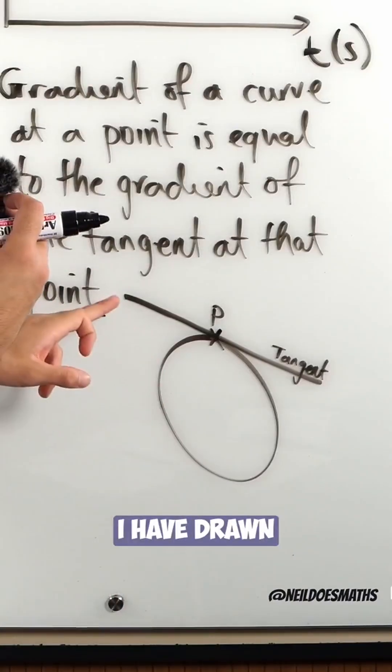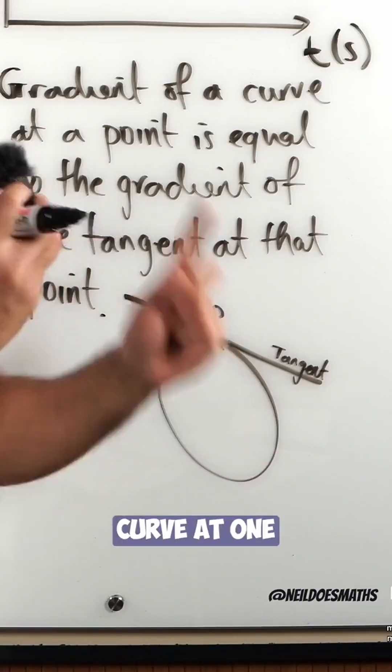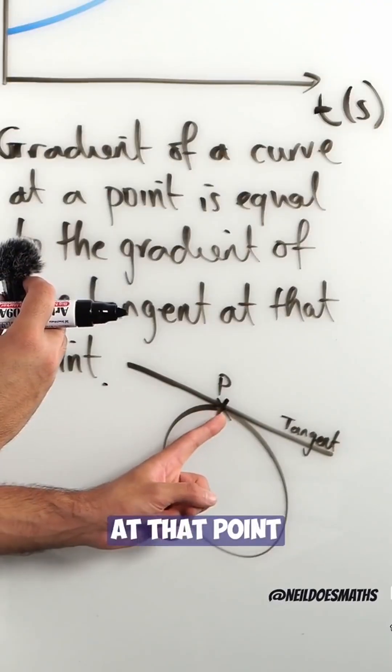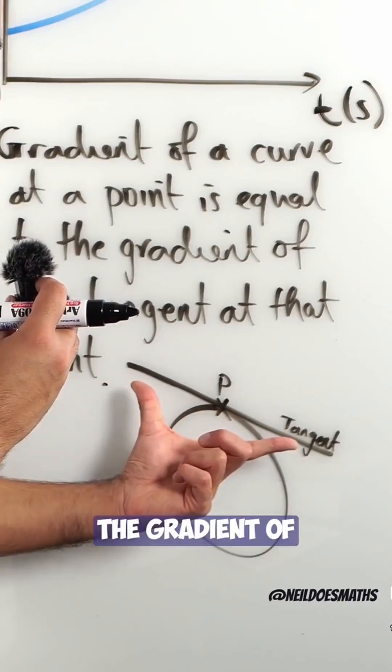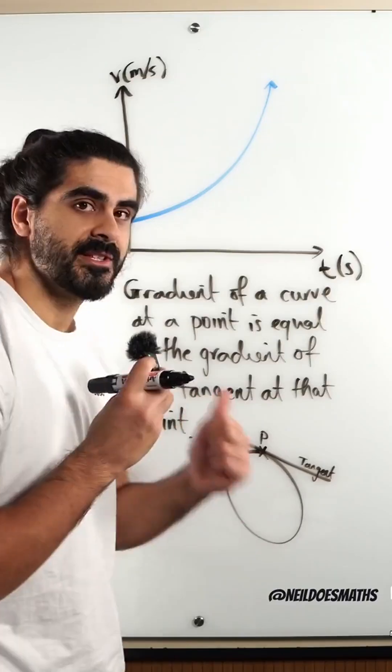Check the circle out. I have drawn a tangent, meaning a straight line, which meets our curve at one point. So the gradient of the circle at that point is equal to the gradient of that line, meaning the value of m in y = mx + c.